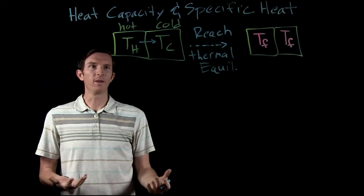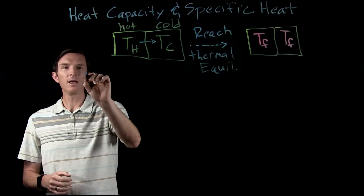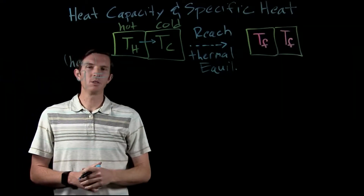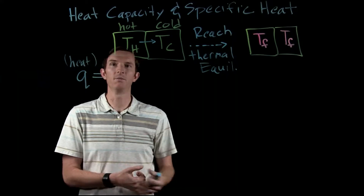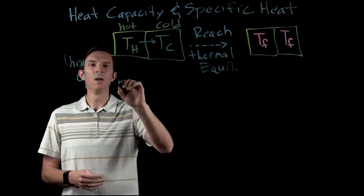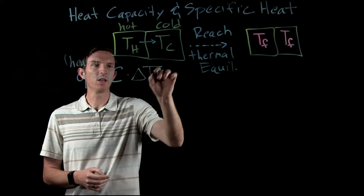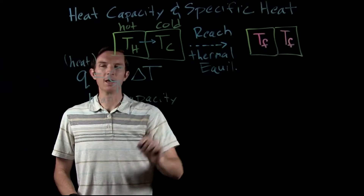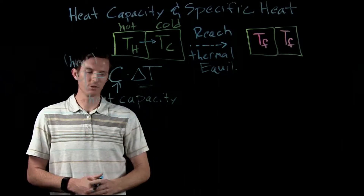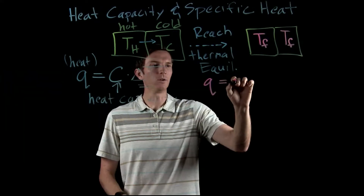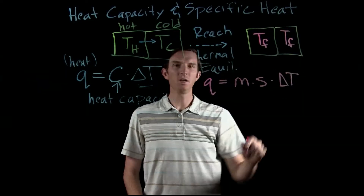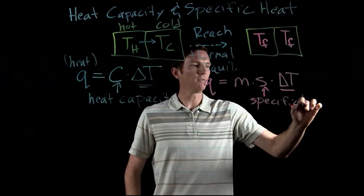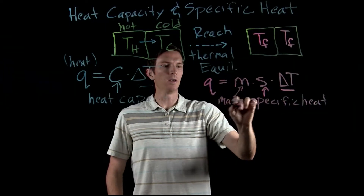We want to quantify this heat transfer, and it has to relate to temperature change. Heat, denoted as q, equals C times the change in temperature, where C is the heat capacity. Another formula is q equals mass times specific heat times the change in temperature. Both formulas use temperature change as the measured value. The specific heat and heat capacity are the conversion factors between heat and temperature.